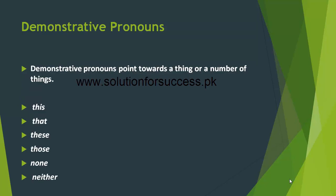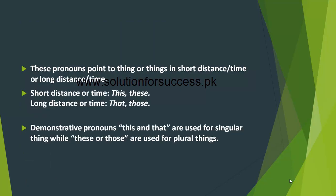Demonstrative pronouns point towards a thing or a number of things. Demonstrative pronouns میں this, that, these, those, none اور neither شامل ہیں۔ یہ pronouns short distance اور short time کے لیے this اور these کا استعمال کرتے ہیں، جبکہ long distance اور long time کے لیے that اور those کا استعمال کرتے ہیں۔ This اور that singular چیز کی طرف اشارہ کرتے ہیں جبکہ these اور those plural چیز کی طرف۔